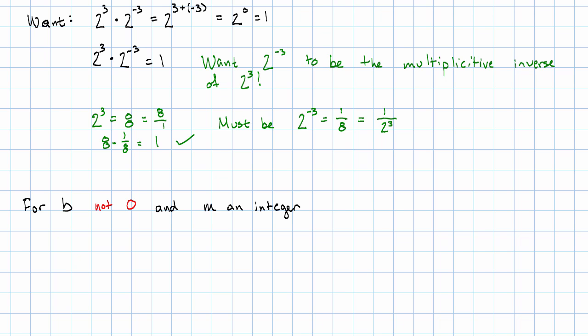For b not zero and now m any integer, we must have b to the m times b to the opposite of m equals b to the m plus the opposite of m. So that's just b to the zero, which is one. So b to the negative m must be the multiplicative inverse of b to the m.